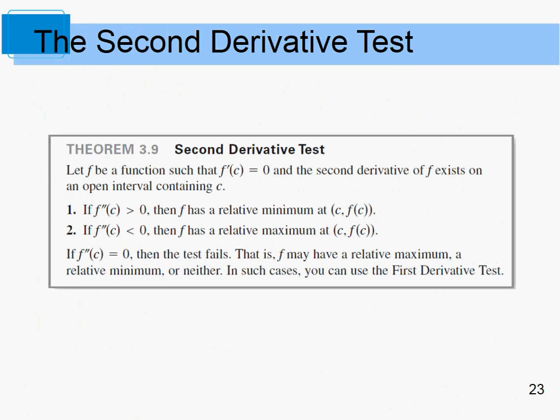Here's the second derivative test. If the first derivative equals zero at a critical number c and the second derivative exists there, then: if f''(c) > 0, it's a relative minimum; if f''(c) < 0, it's a relative maximum. This makes sense: a positive quadratic has a minimum, and a negative quadratic has a maximum.